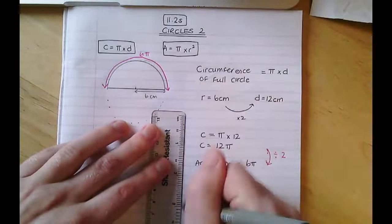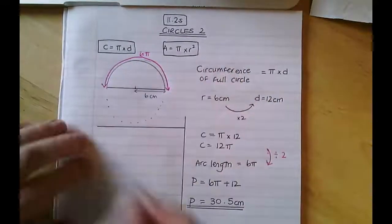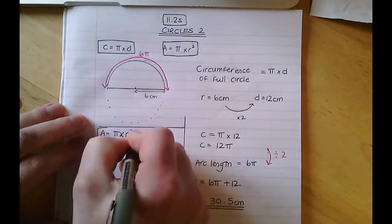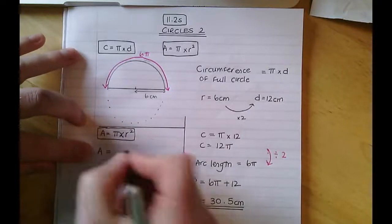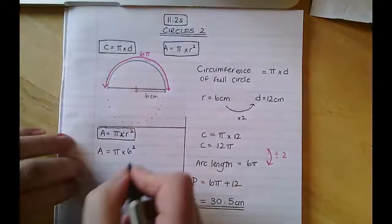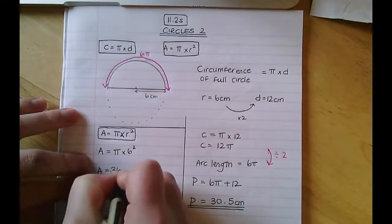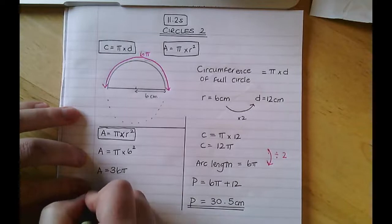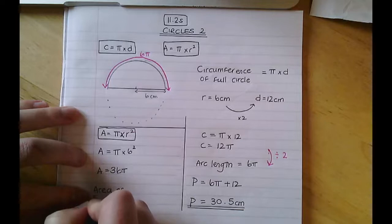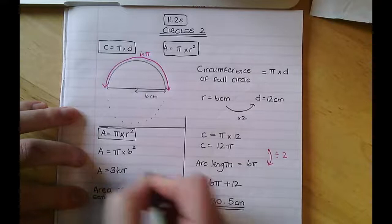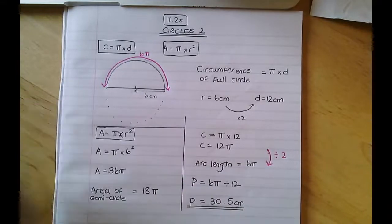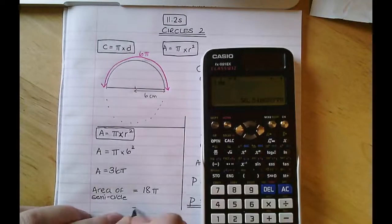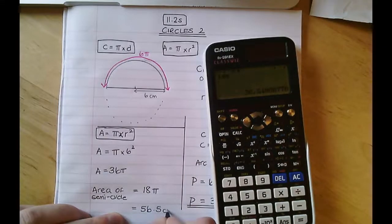The area is actually a little bit easier. I'm going to use the area formula for a full circle: pi times by the radius squared. The area of the full circle would be pi times 6 squared. 6 squared is 36, so the area is 36 pi. But I don't have a full circle — I've got half a circle. So the area of the semicircle is 36 pi divided by 2, which is 18 pi, which is 56.5 to one decimal place — in centimetres squared, because it's an area.